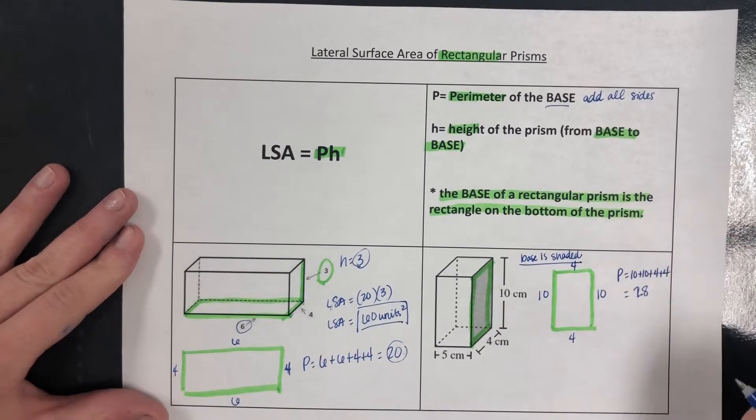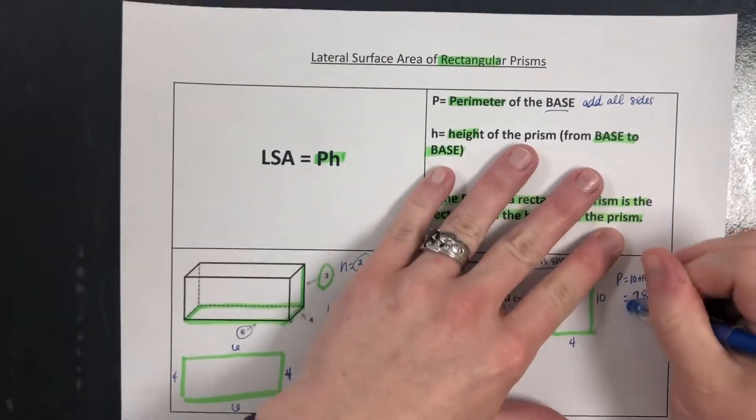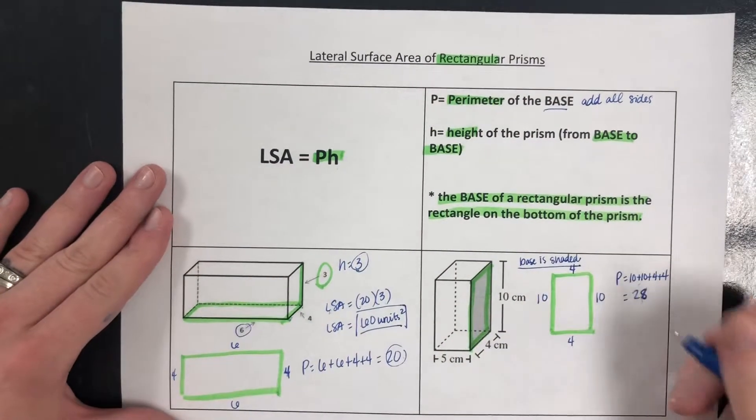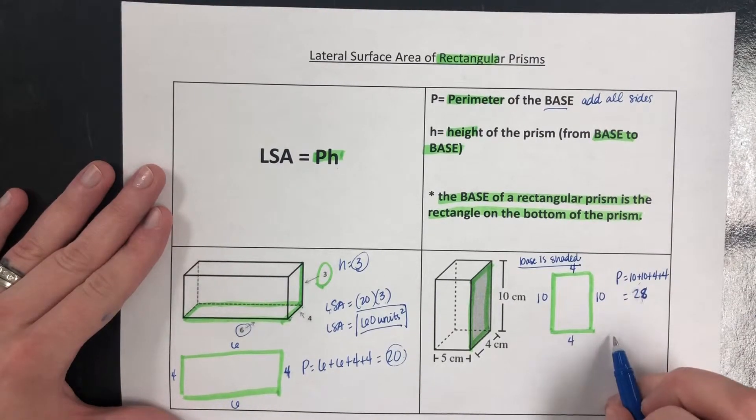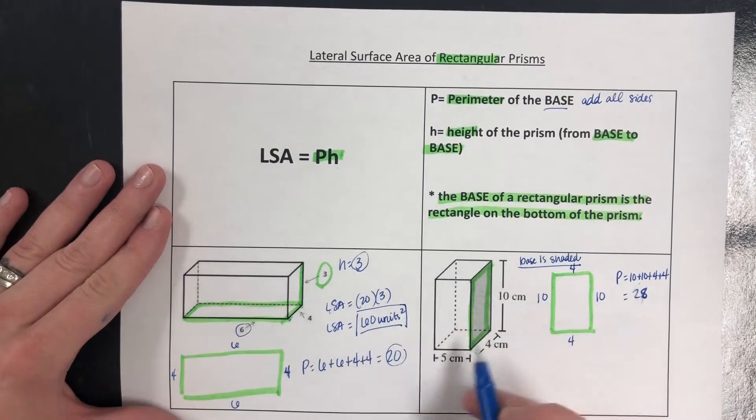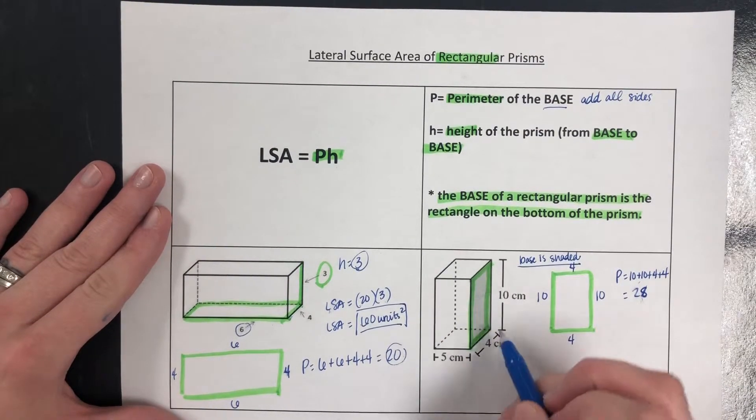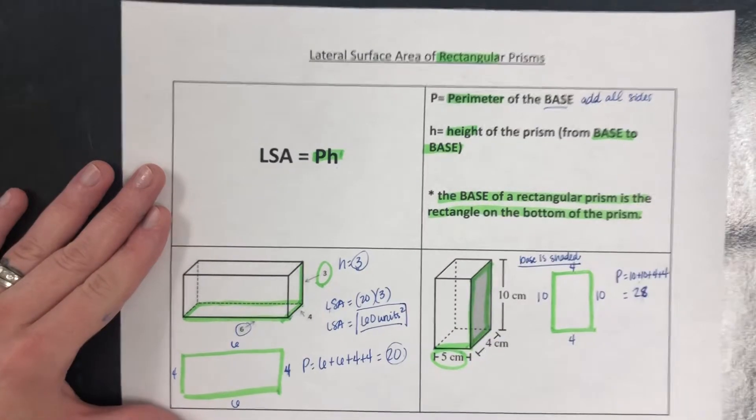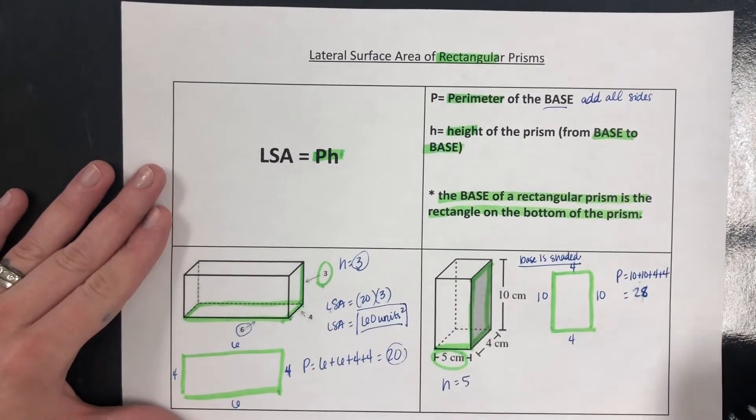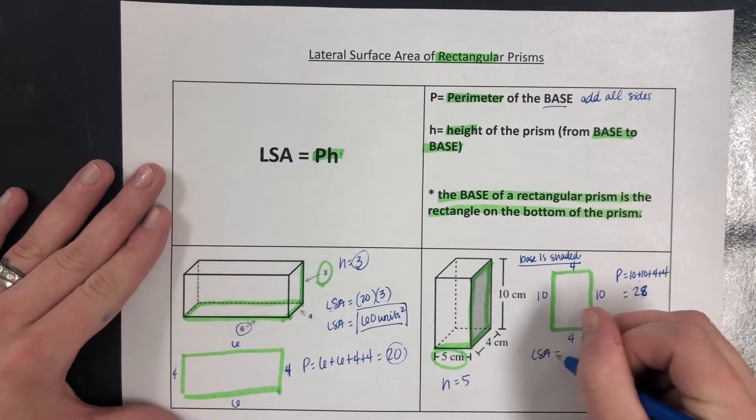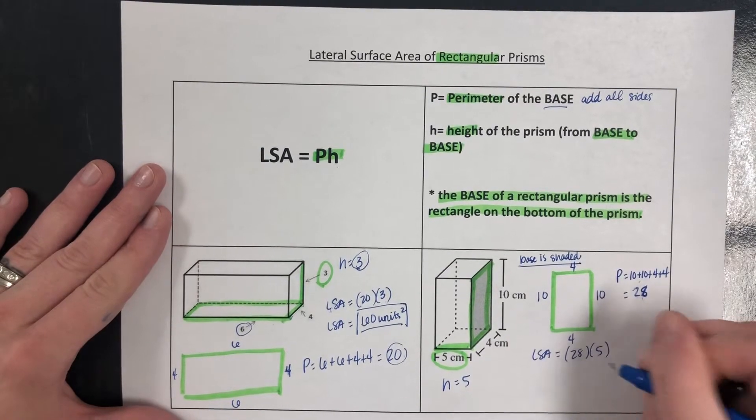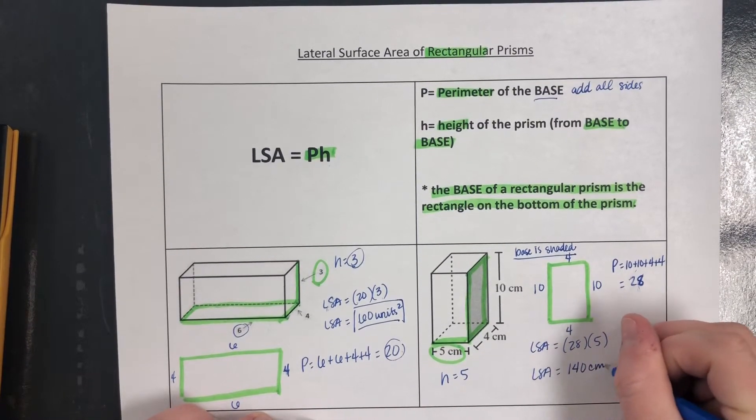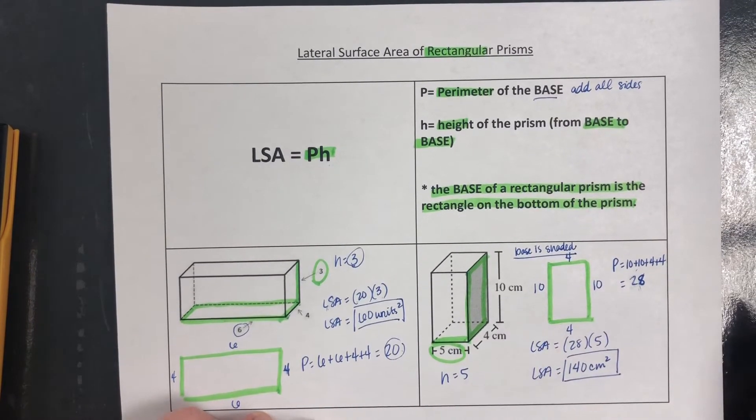28 for P, the perimeter. Now we need the height of the prism. Since we used this side piece as the base, that means that the opposite side is actually the other base and that our height is going to come from this other number here. So H is 5. We multiply lateral surface area, which is 28 times 5, and we get 140 centimeters squared for our lateral surface area.